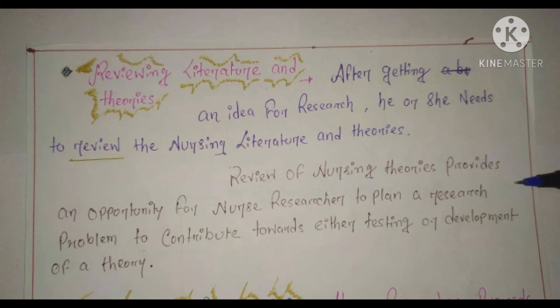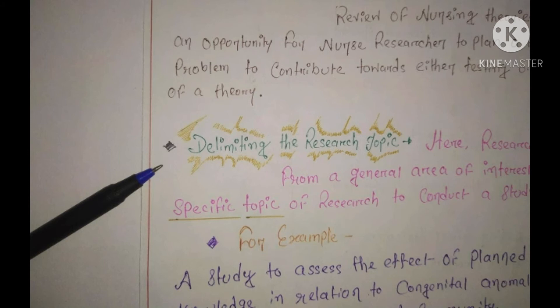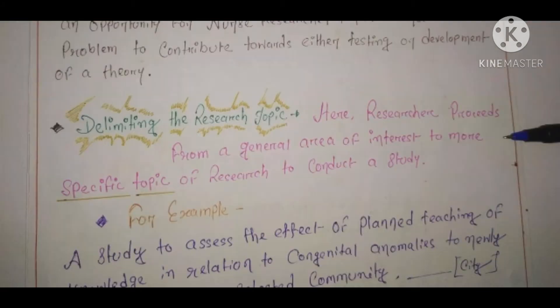So at first you will select a problem, then you will review the literature and theories about that particular problem, so that you can make an improvement or change. The third step is delimiting the research topic. Here the researcher proceeds from a general area of interest to a more specific topic of research. Delimiting means to establish boundaries — you select your area of interest, then become more specific and limit your study to a specific problem.